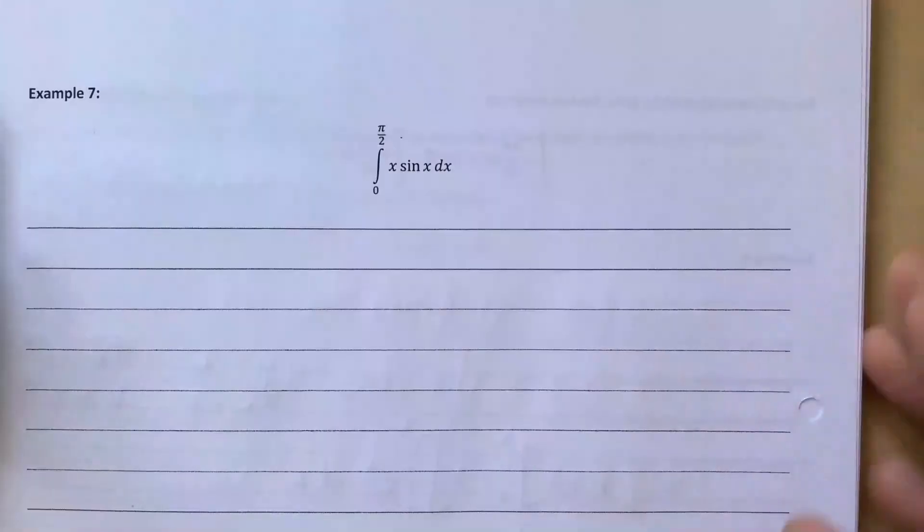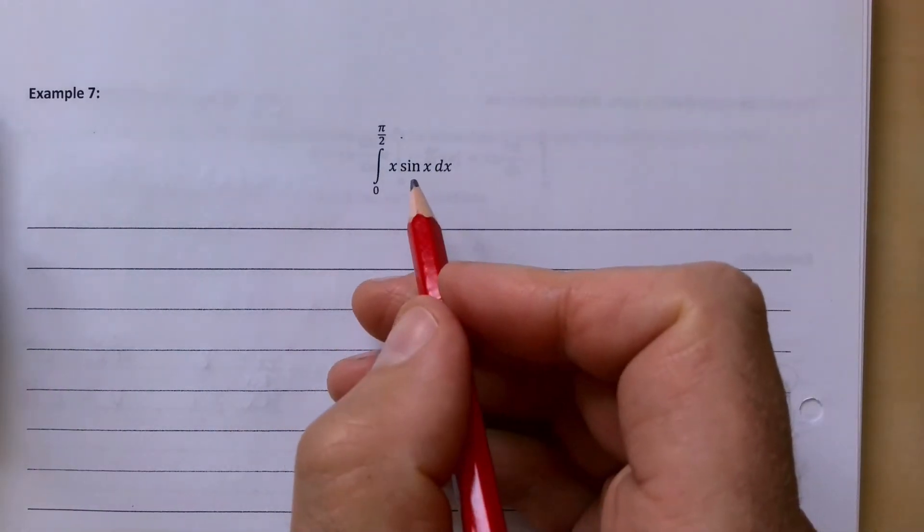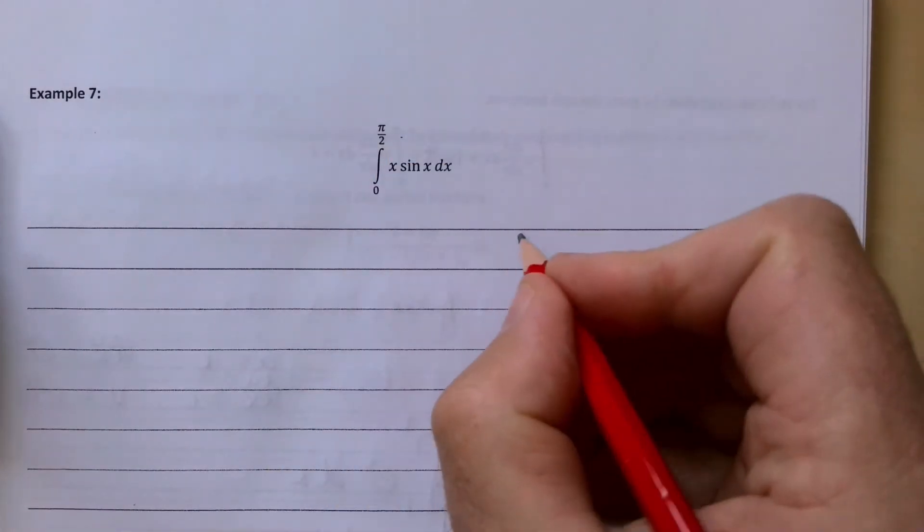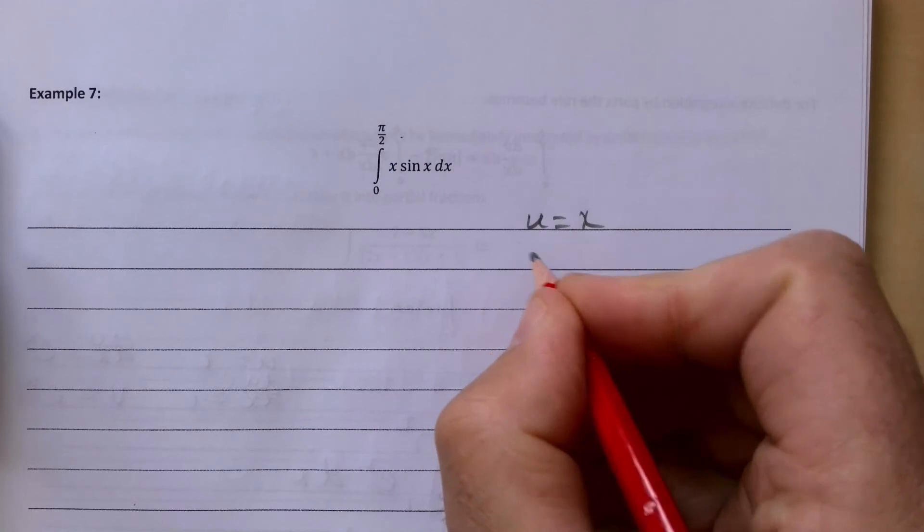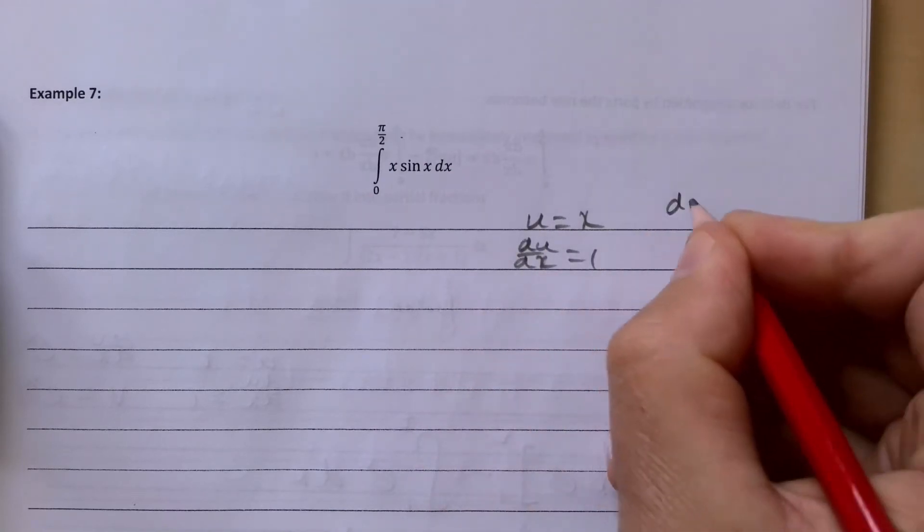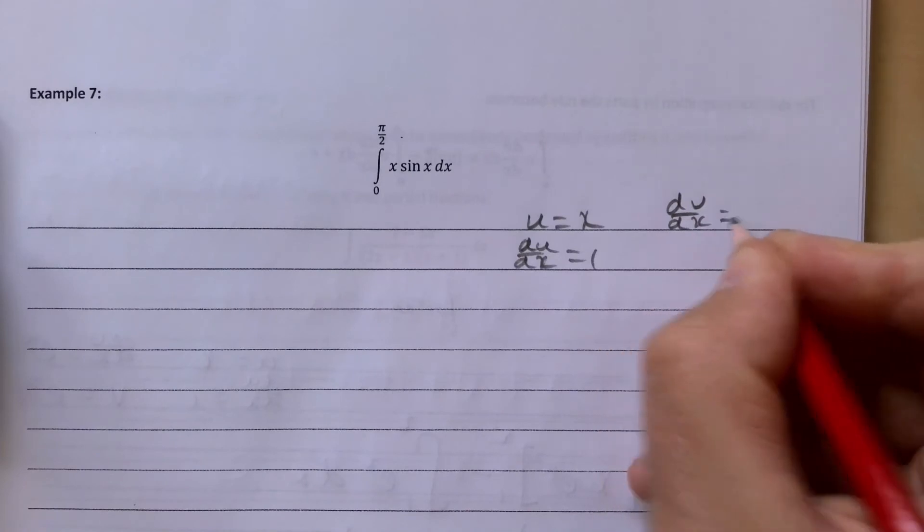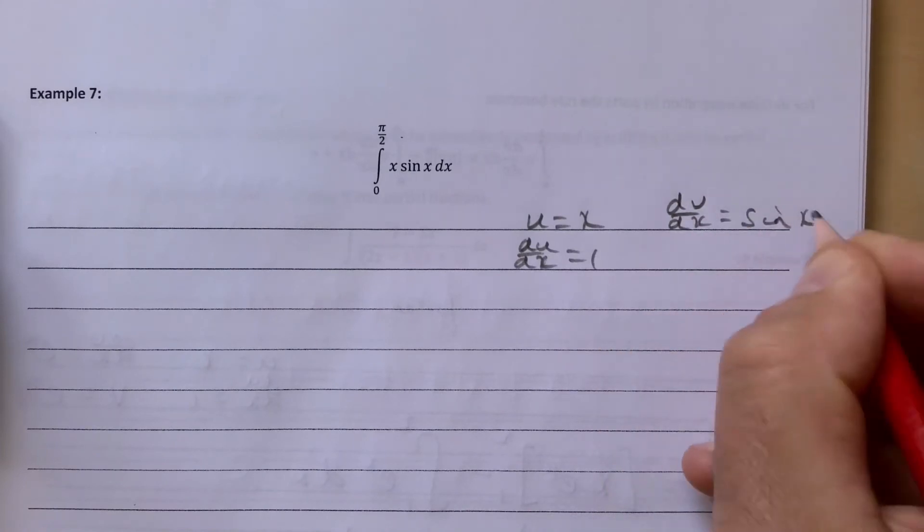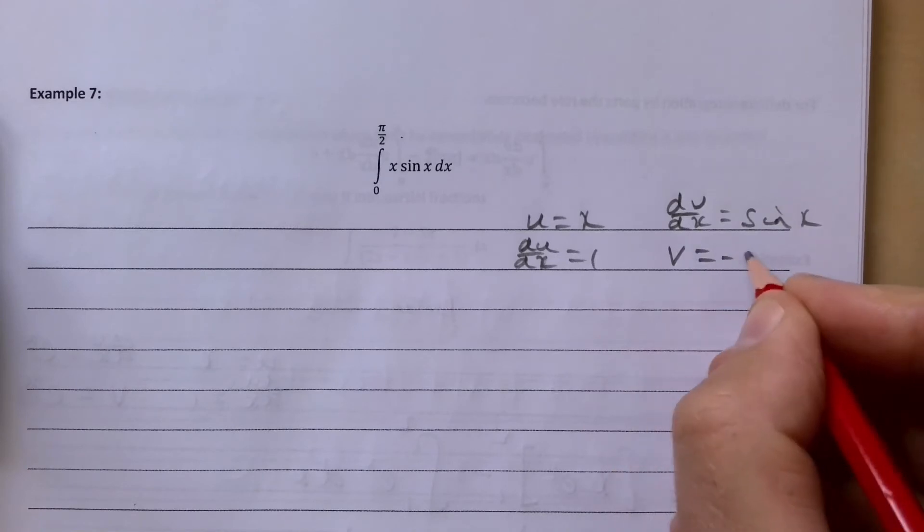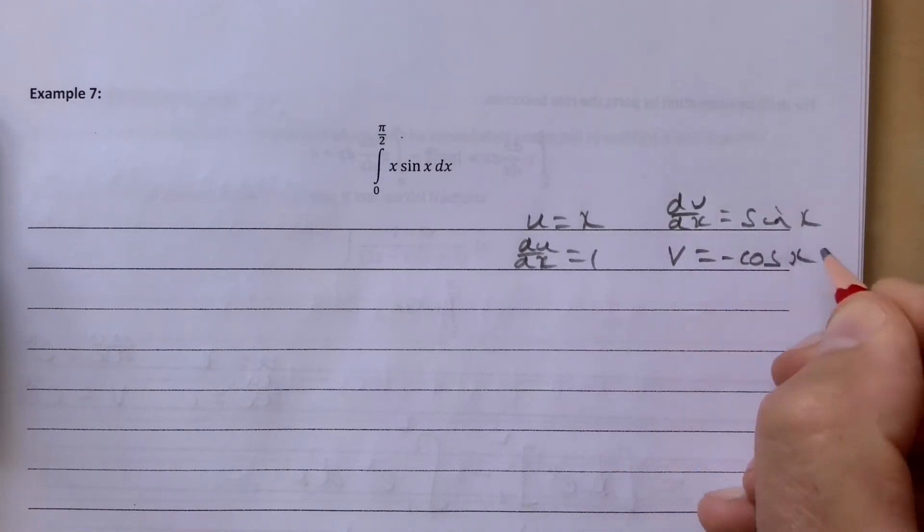Something similar, let's put it down here. So this is x sin x. Again, I think we integrated this one earlier on but not with limits on it. So u is x, du by dx is 1, dv by dx is sin x, and if we integrate that we get minus cos x.